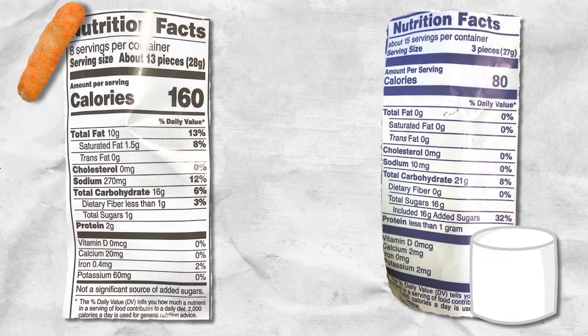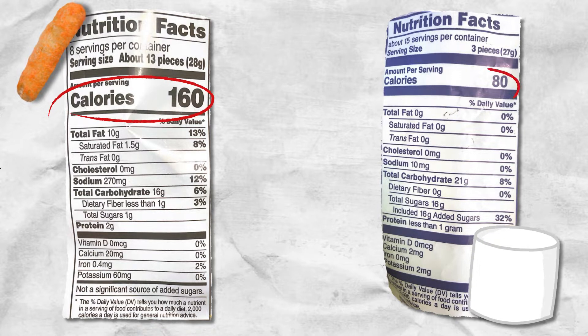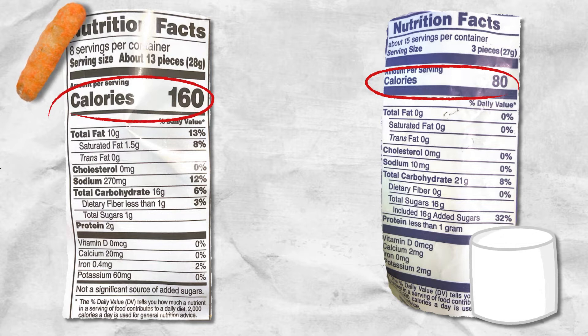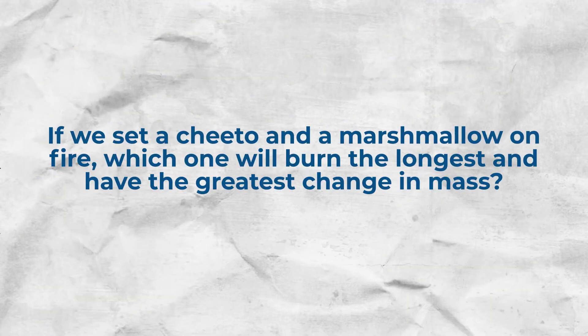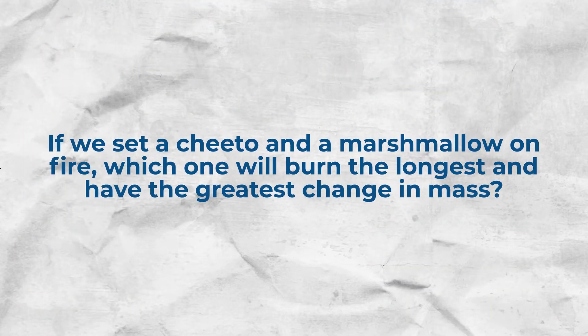We're going to look at the nutrition labels of a Cheeto versus a marshmallow. The Cheeto is set to have 160 calories per serving and the marshmallow is set to have 80 calories per serving. Given that calories are a unit of energy, if we set both food items on fire, which one do you think is going to burn the longest and have the largest change in mass?